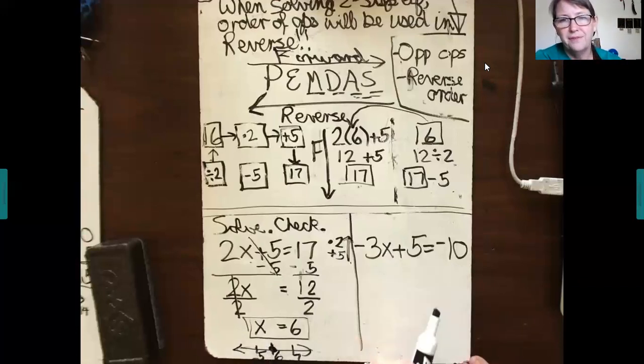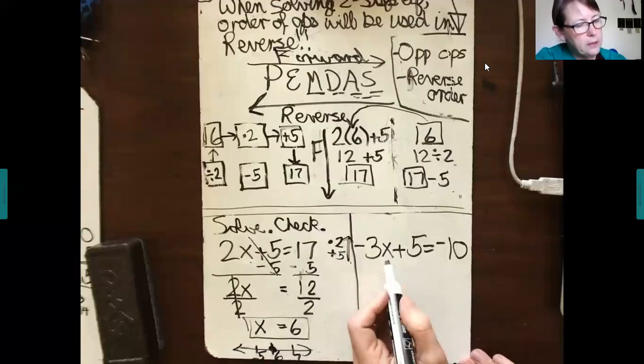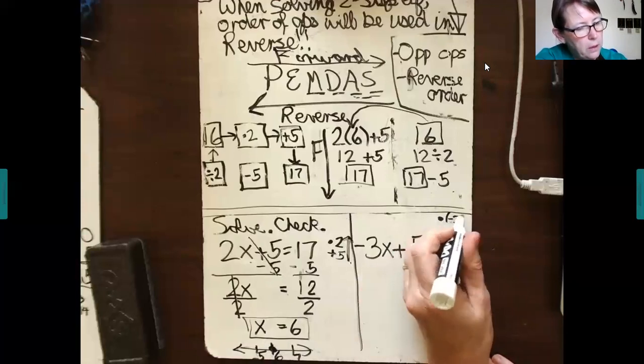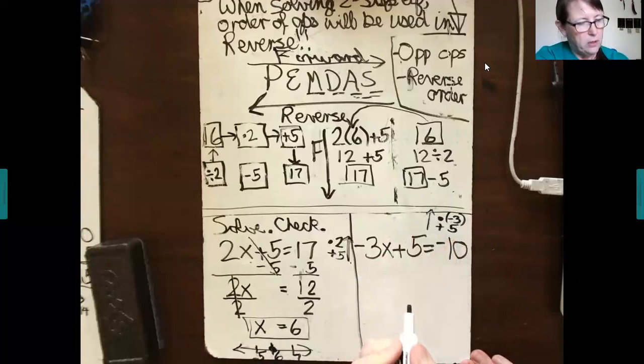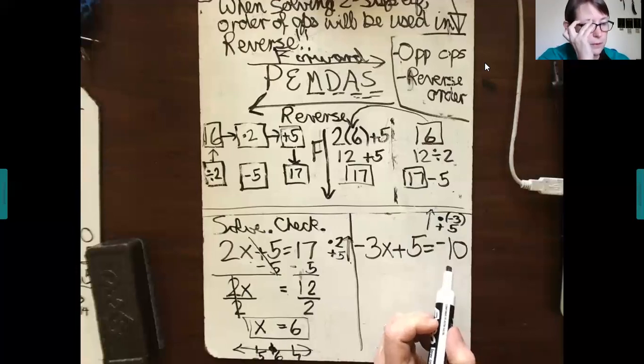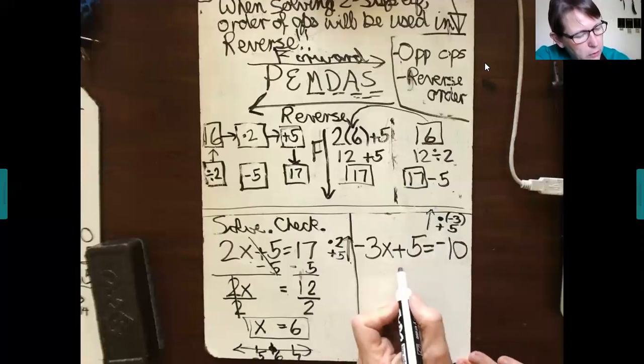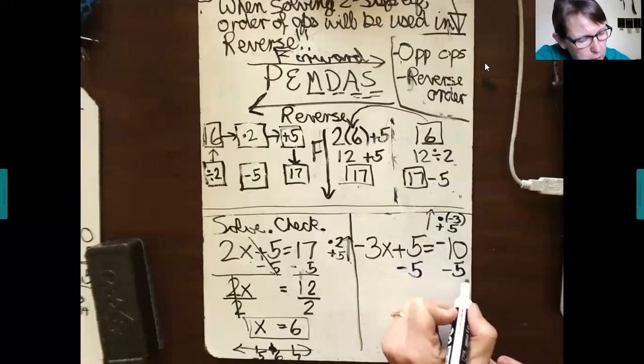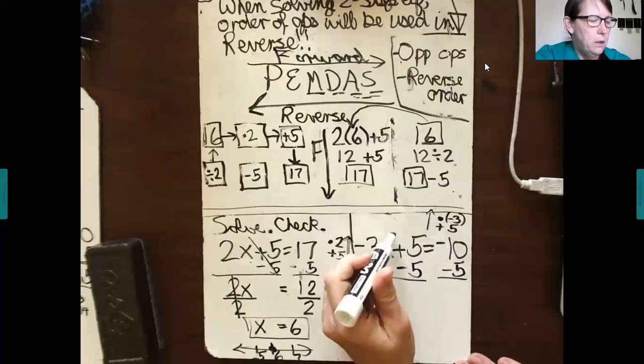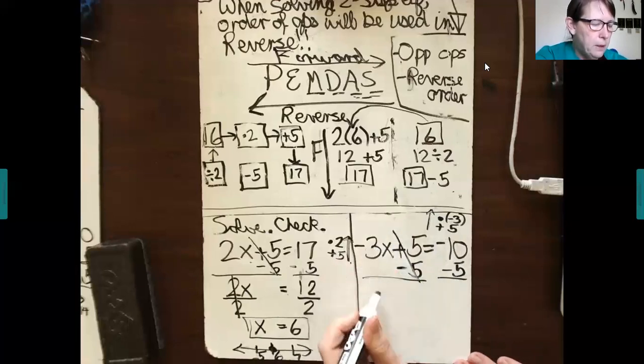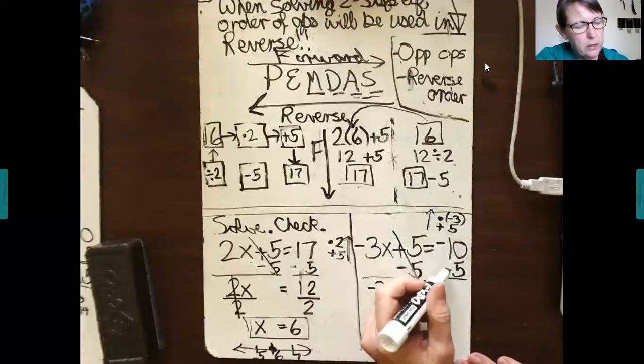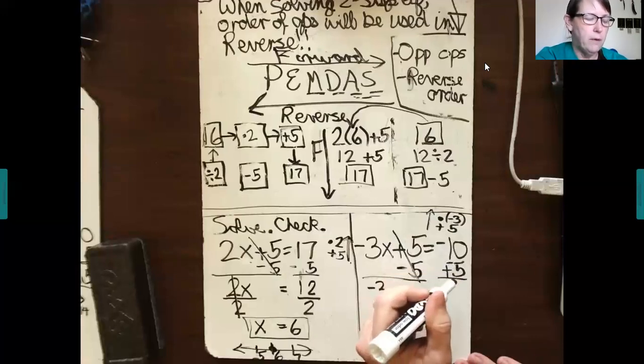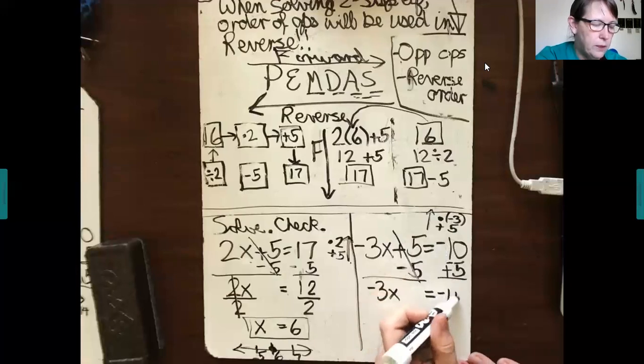You stop the video and try this one. Okay, now that you've had a chance to try it, let's see what's being done to x. It's being multiplied by negative 3 and it's being added by 5. Reverse. So we're going to do the opposite operation in reverse order. Okay, instead of plus 5 to each side, we're going to subtract 5 to each side. Plus 5 minus 5 when combined equals 0. Copy the negative 3x. Copy the equals. Now I have negative 10 minus 5. Change that subtraction to add. The opposite of 5 is negative 5. Negative 10 plus negative 5 is negative 15. We're almost done.